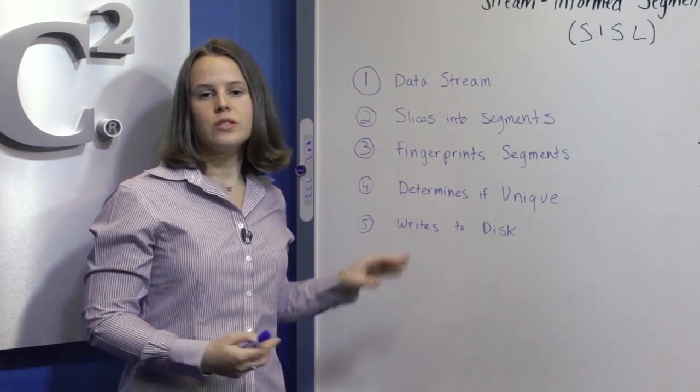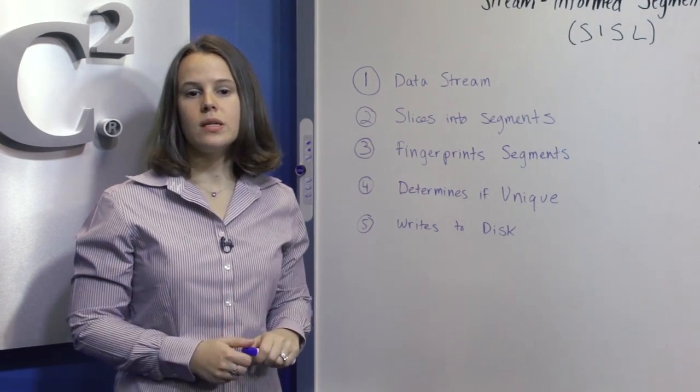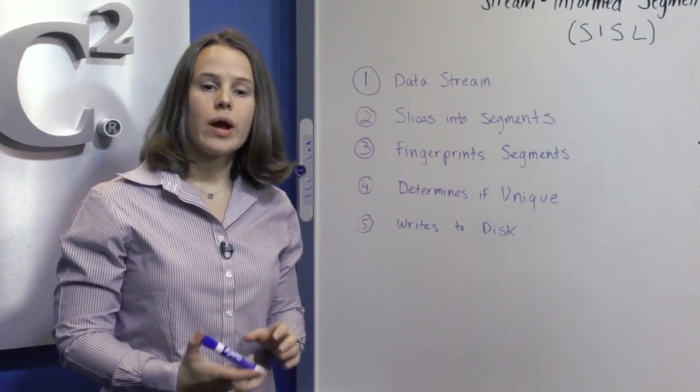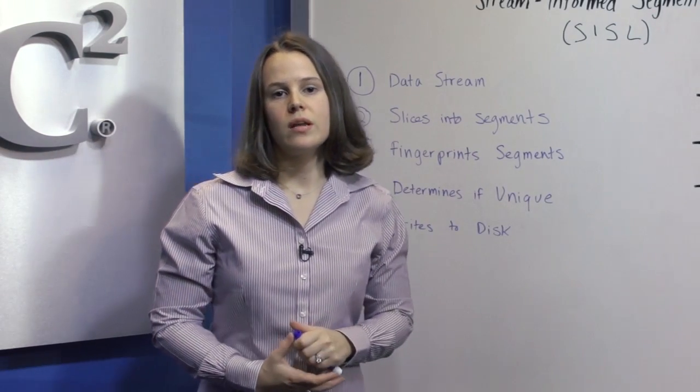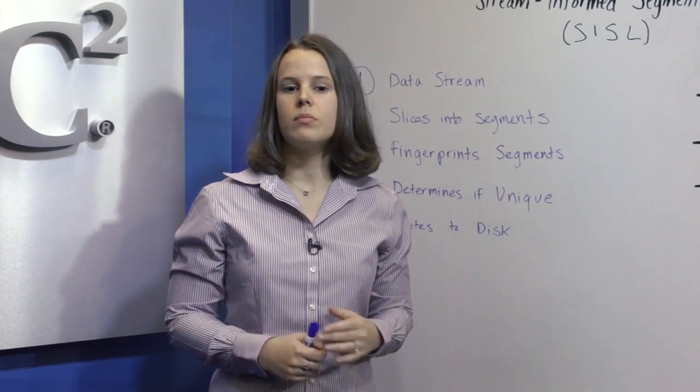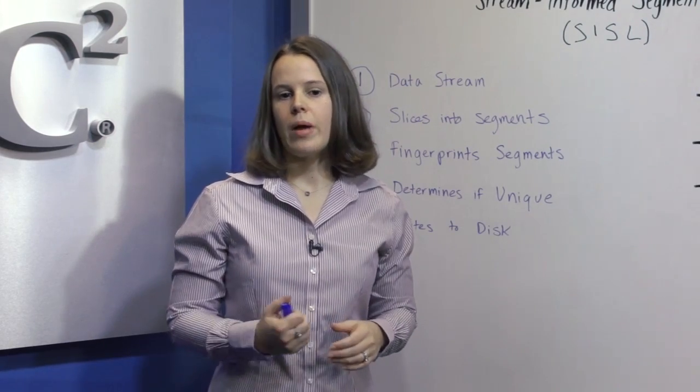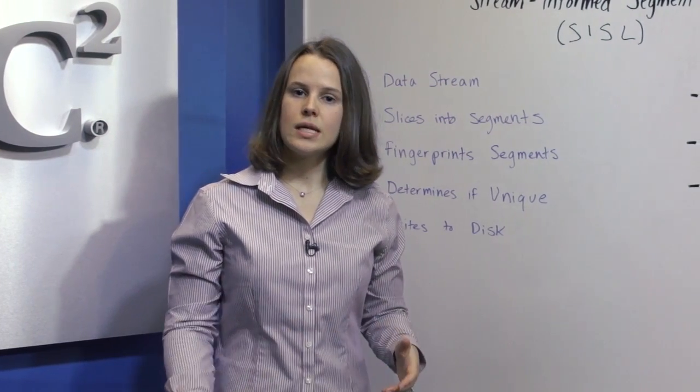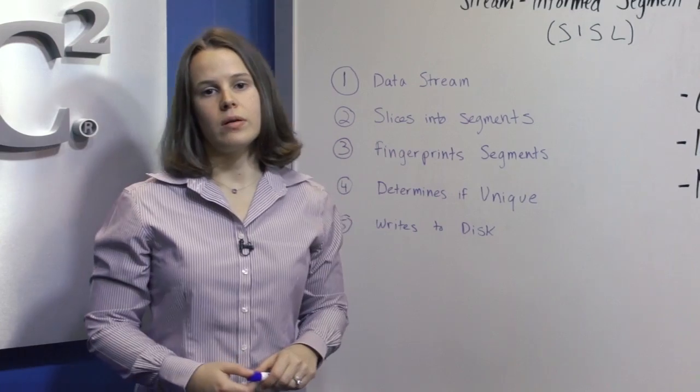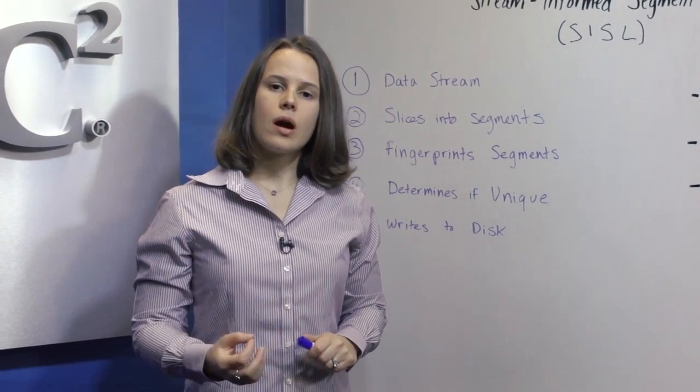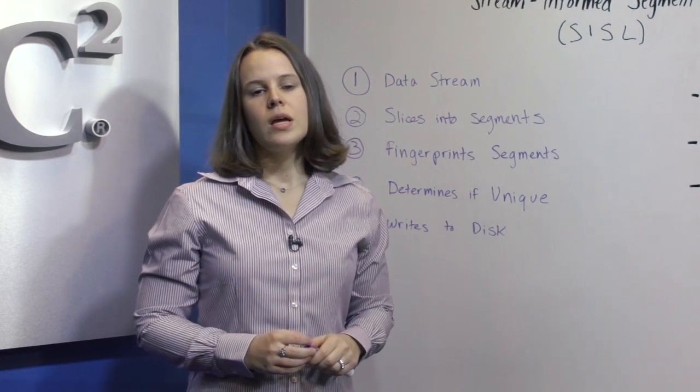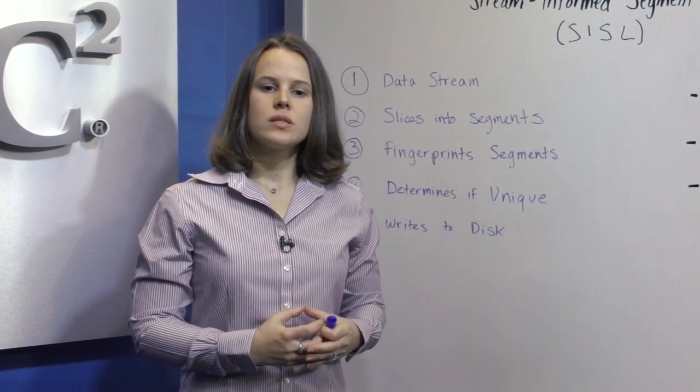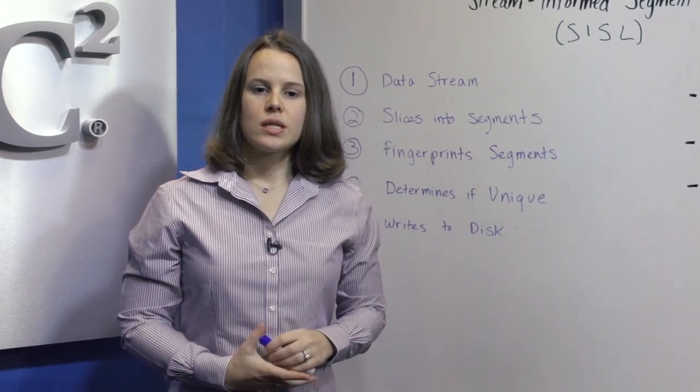SISL will verify if it's unique by two different techniques performed in-line in RAM prior to storing to disk. First, SISL will try to identify new segments quickly in memory to save the system from having to do a lookup on the disk index. However, if the system does need to do a lookup on the index on disk, a key to efficiency here is to retrieve as many segments as possible with each disk access.